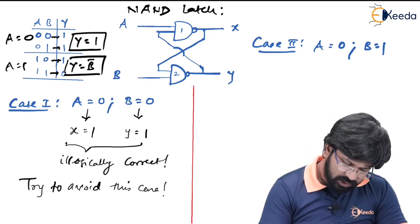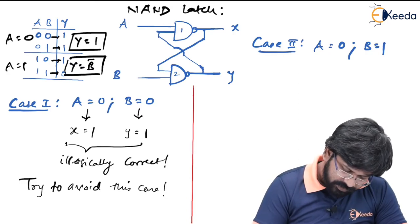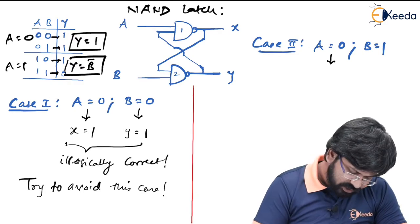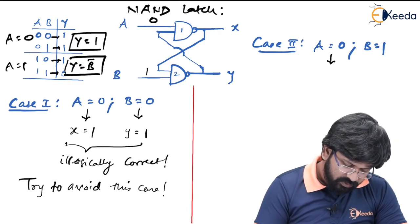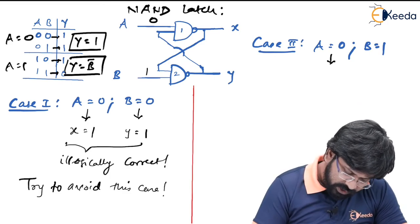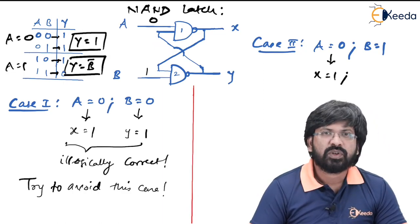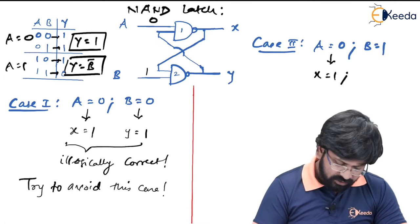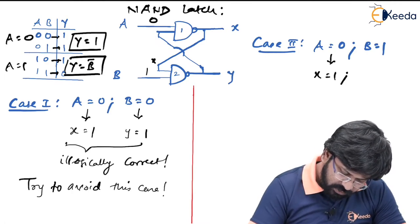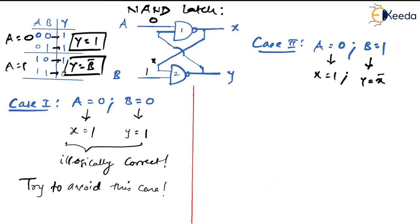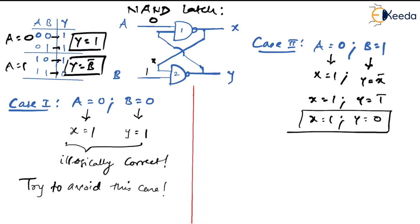Let us move to the next case when A equals 0 and B equals 1. Here, A equals 0 causes NAND gate number 1 to be disabled, so X becomes 1. B equals 1 makes NAND gate number 2 act as a NOT gate for the other input, which is X. Therefore Y equals X-bar. Since X equals 1, Y equals 1-complement, so Y equals 0. Conclusion: A equals 0, B equals 1 causes X to become 1 and Y to become 0.